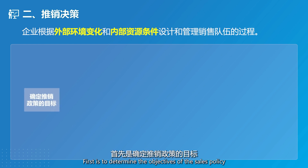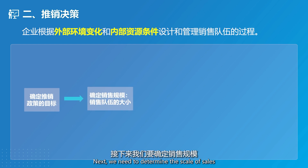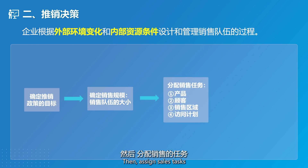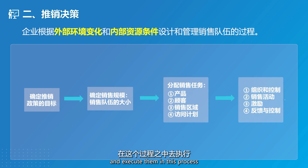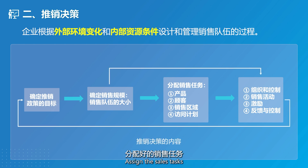First is to determine the objectives of the sales policy. Next, we need to determine the scale of sales to decide the size of the sales team. Then, assign sales tasks and execute them in this process.